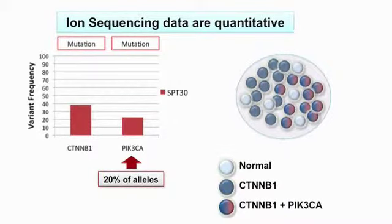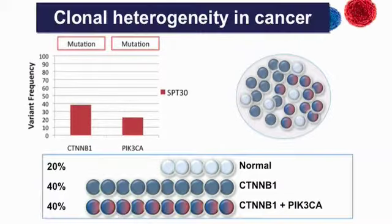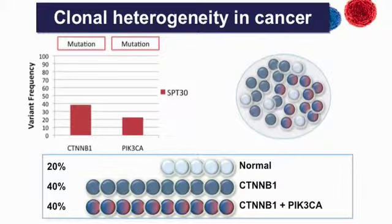In this case we found a beta-catenin mutation but also a PI3K mutation in 20 percent of the alleles, which means we are reading cancer heterogeneity. This tumor is made up of 100 cells: 20 are normal, 80 are cancer — all have the beta-catenin mutation, but a proportion also carries an additional mutation, so we are reading the subclone.